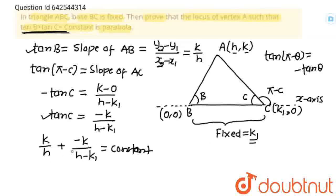So, in this equation there is no variable. k1 is fixed. This is constant. So, now if we will take LCM, we will get h into h minus k1. And this h minus k1 will be multiplied with k. So, k times h minus k1 minus hk is equals to constant.